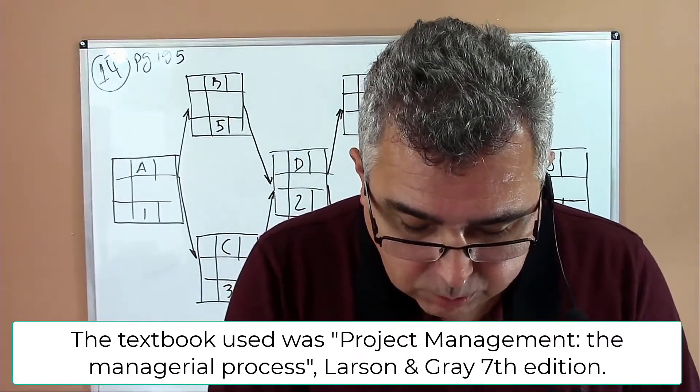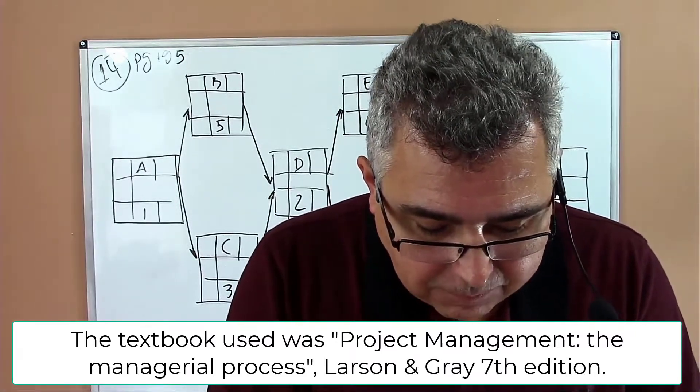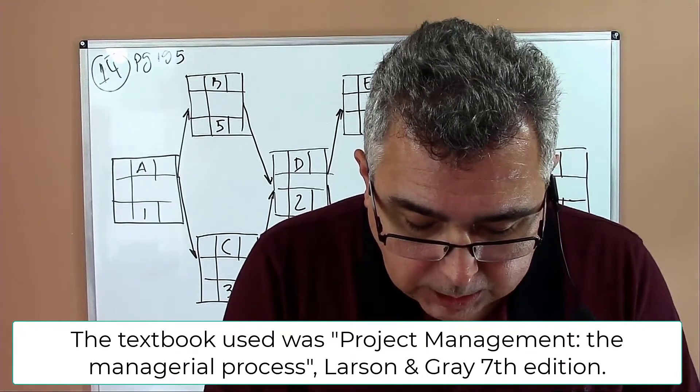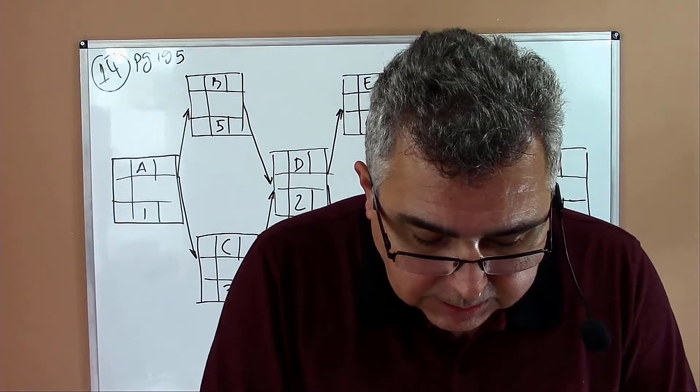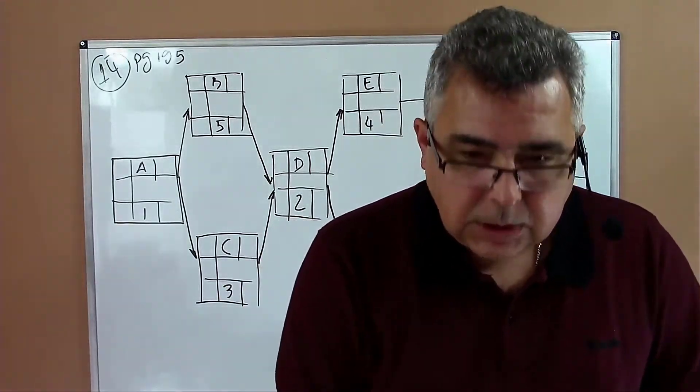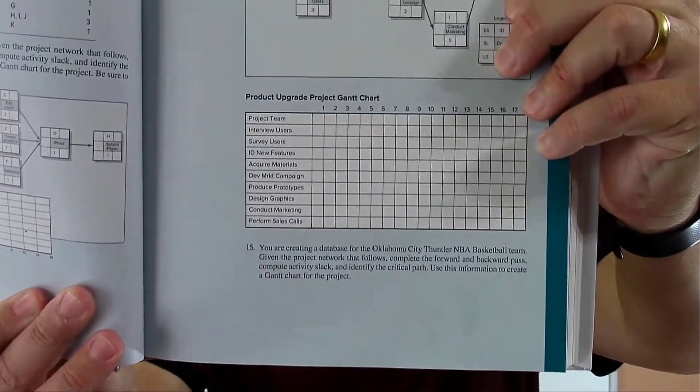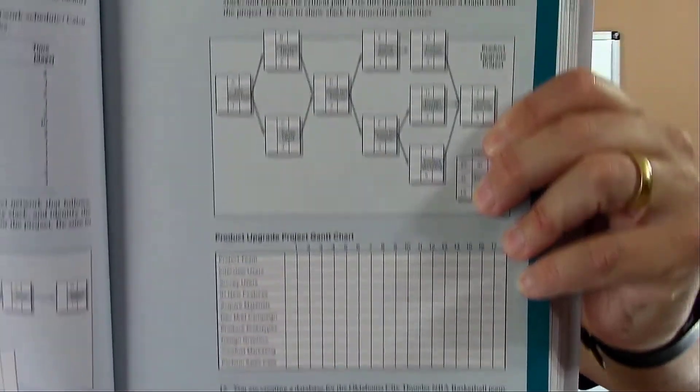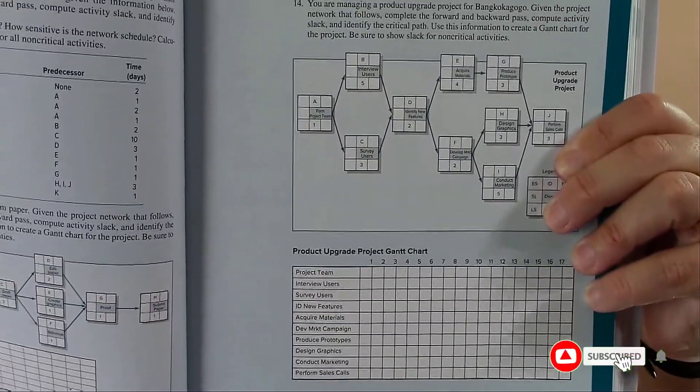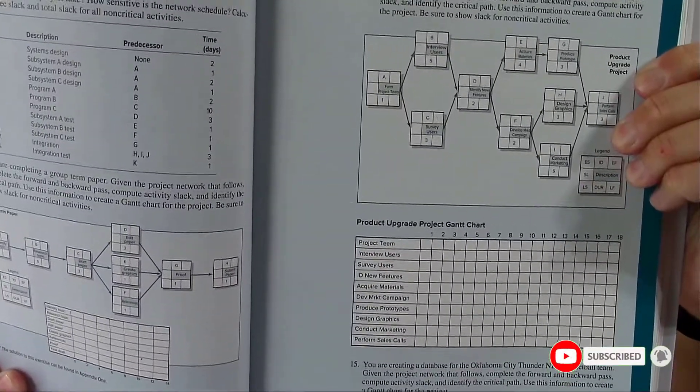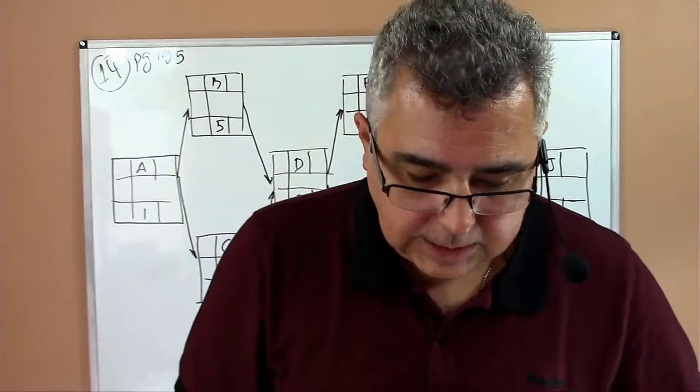Given the project network that follows, complete the forward pass and backward pass, compute activity slack, and identify the critical path. Use this information to create a Gantt chart for the project. Be sure to show slack for non-critical activities. In the book you have a table on the bottom. First we'll be computing the network, then we'll be transferring the dates to the Gantt chart. That's the problem.